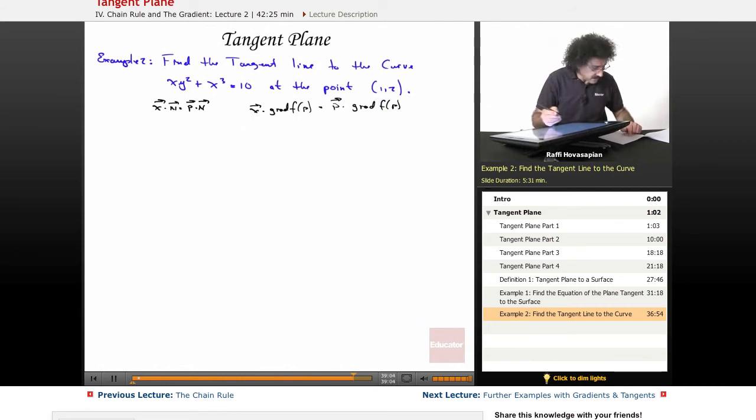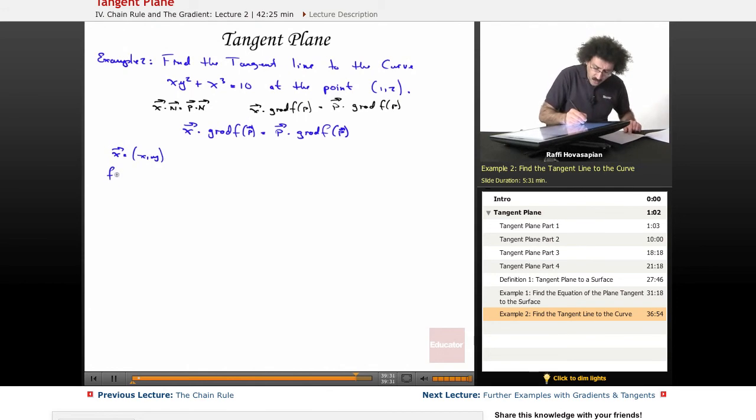So what we want is, let me write it one more time. I know it's a little redundant, but it's always good to write. x dot gradient of f at p equals p dot gradient of f at p. We're going to let x equal (x,y), that's the component form. Our f is xy² + x³.